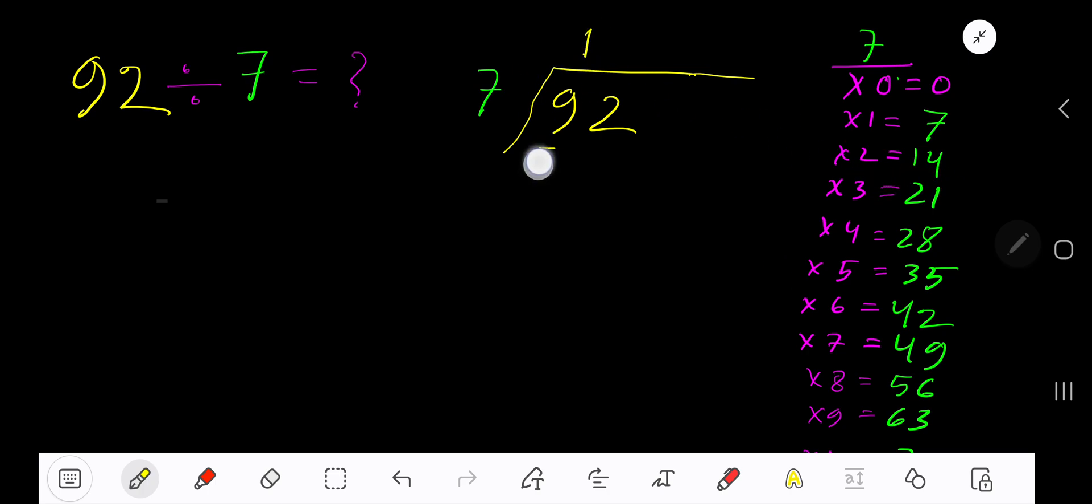So one time. 1 times 7 is 7. Subtract and bring down the next digit. 7 goes into 22 how many times? Look, 4 times is 28 which is greater, so 3 times. We have to consider 3 times 7 is 21. Subtract: 1.